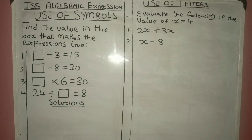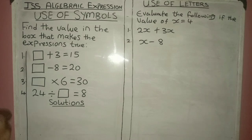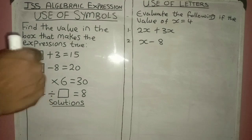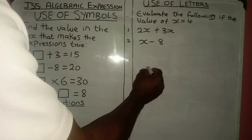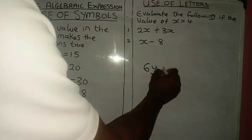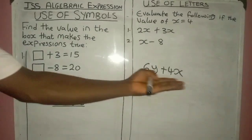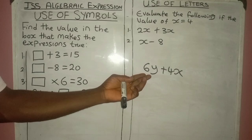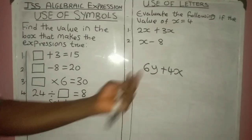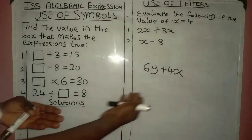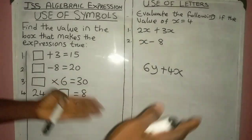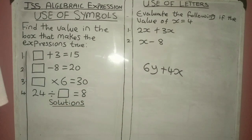Now let's begin with the use of symbols. But before we start, let's understand what algebra is all about. Algebra is a branch of mathematics that deals with the use of numbers and letters together. Most of the time you see questions that come in this form, whereby they will write something like 6y plus 4x. You can see from this expression we have a number and a letter put together, so it is called an algebraic term. When we talk about algebraic expression, this is a perfect example because it is made up of numbers and letters put together.